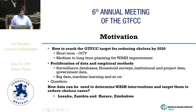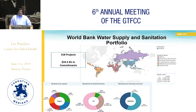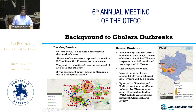Here I am presenting some of the work that we did in the case of Lusaka and Harare. The World Bank has been very active in the water supply and sanitation area — about 35 billion dollars is committed towards water supply and sanitation investments across the world. Most of these investments happen to be in Asia and Africa, and many of those countries happen to be cholera high-risk countries.